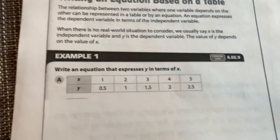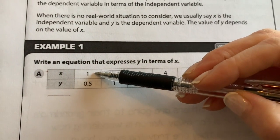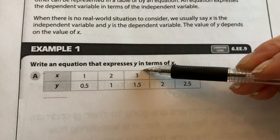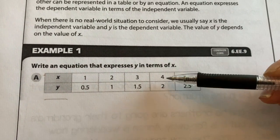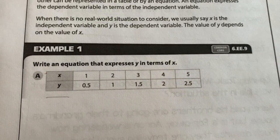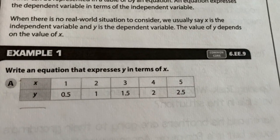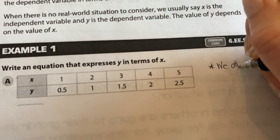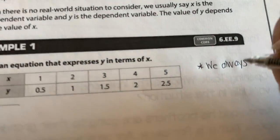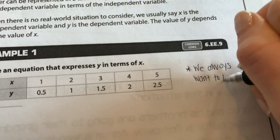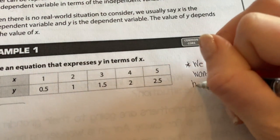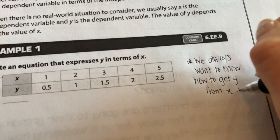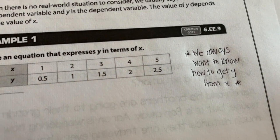For our first example, we're looking at this table. When x is 1, y is 0.5. When x is 2, y is 1. When x is 3, y is 1.5. When x is 4, y is 2. And when x is 5, y is 2.5. We always want to know how to get y from x. When we write our equation, it's always going to be y is equal to.